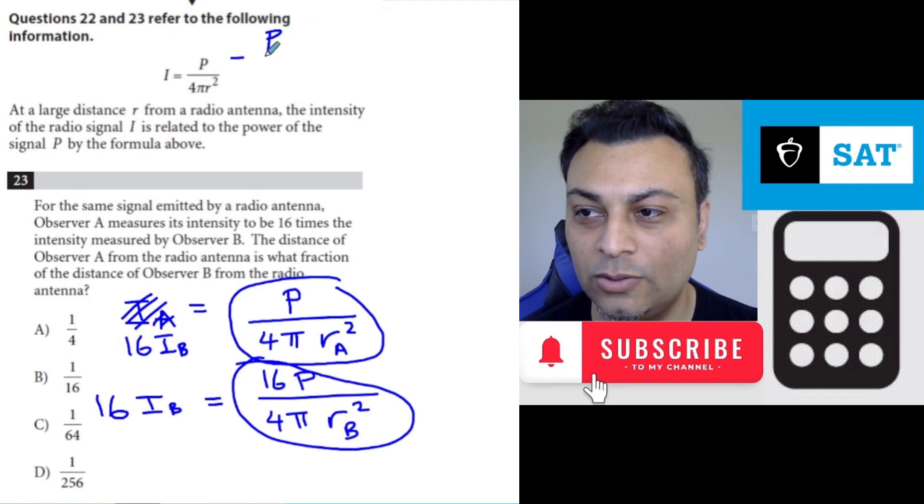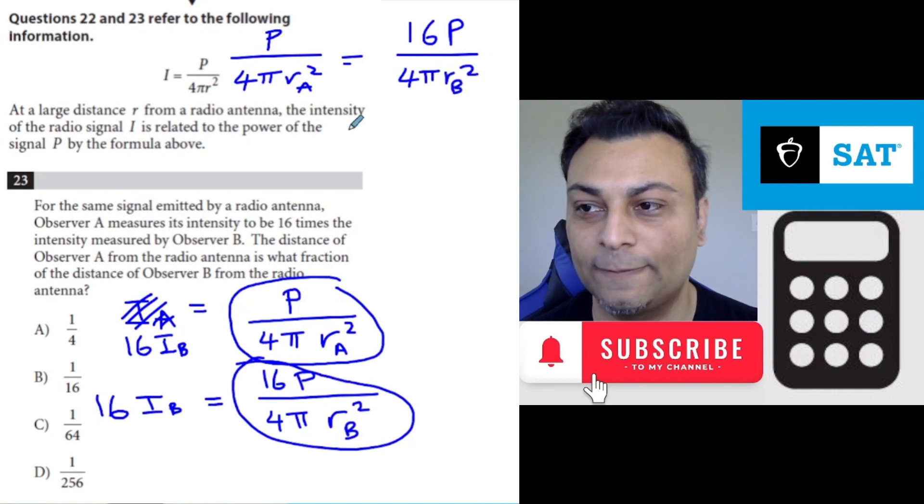P over 4 pi ra squared is the same as 16P over 4 pi rb squared. Just comparing them, we can multiply everything by 4 pi and divide everything by P. So this is 1 now, this is 16. You end up with 1 over ra squared is equal to 16 over rb squared.